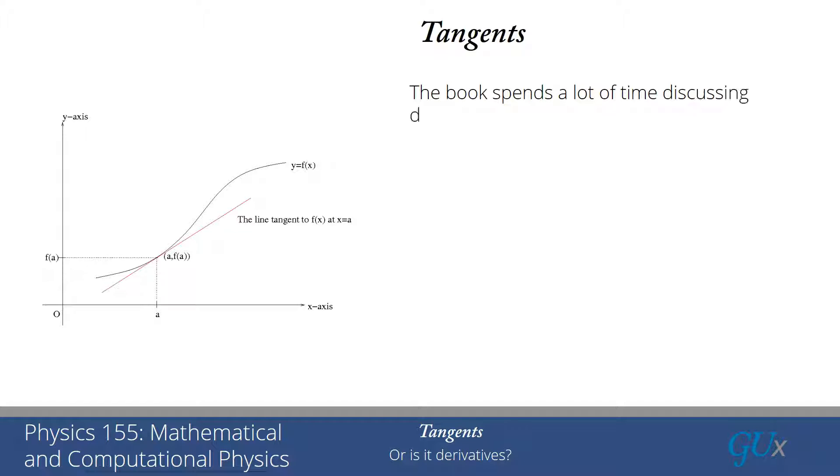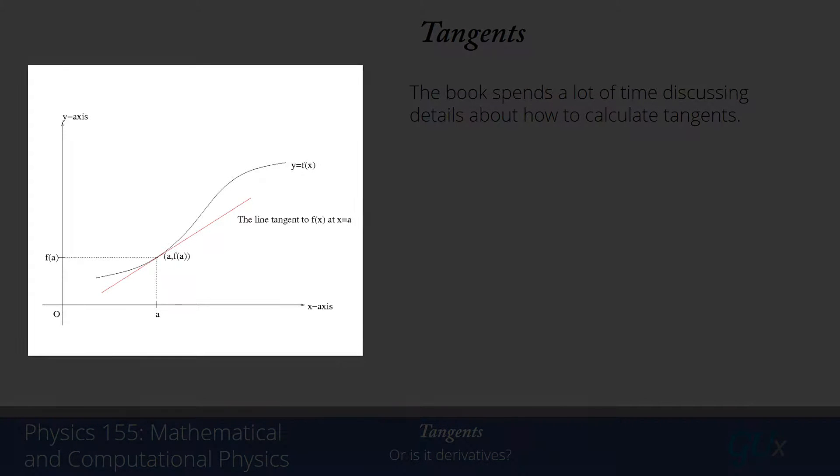The book does spend a fair amount of time discussing details about exactly how you would calculate a tangent. And what we have for you in this picture on the left is some generic function f of x, and then some tangent line to f of x drawn at the point a, where the function takes the value f of a. And that would be the red line here.